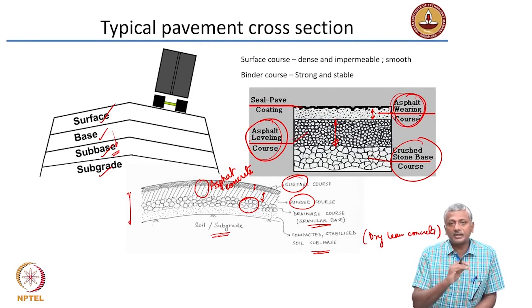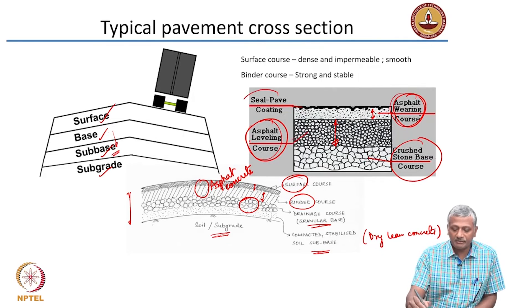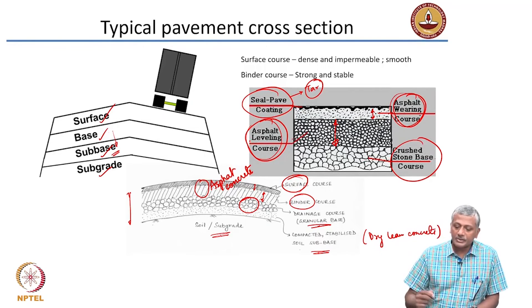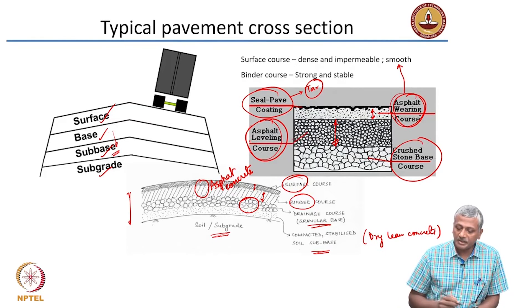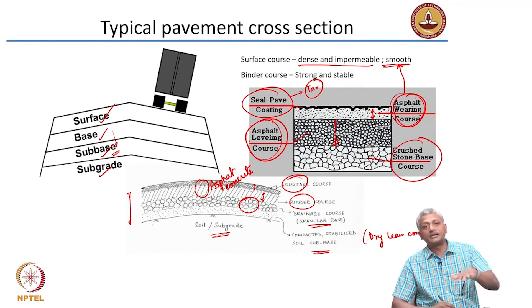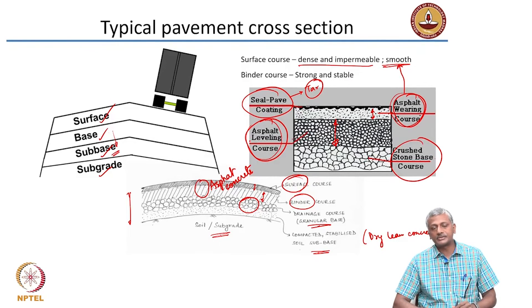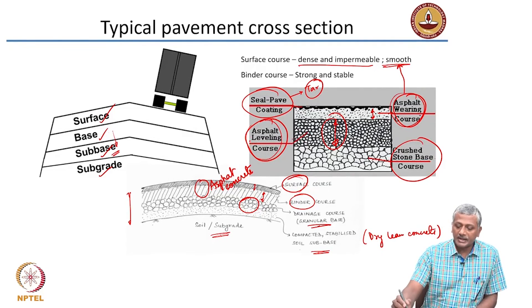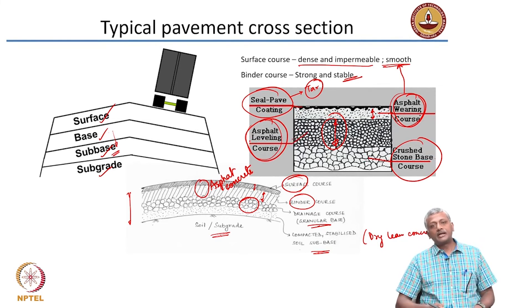Sometimes a seal coat is applied on the top surface, made with materials like tar, which forms a smooth layer without dissolving the asphalt underneath — important for protection against petrol, gasoline, and diesel spills. The surface course must be dense and impermeable to prevent moisture penetration and smooth enough for good vehicle ride. The binder course must be strong and stable, as it forms the majority of the asphalt concrete thickness and provides structural stability.